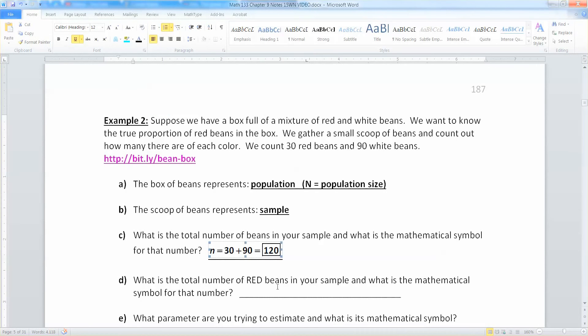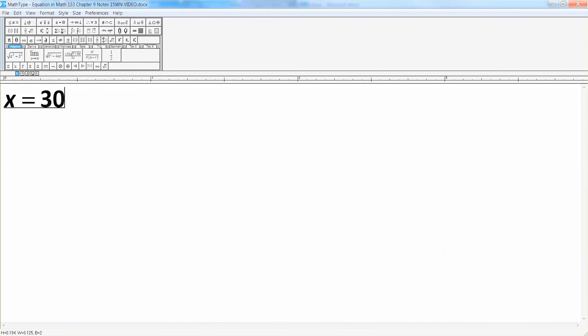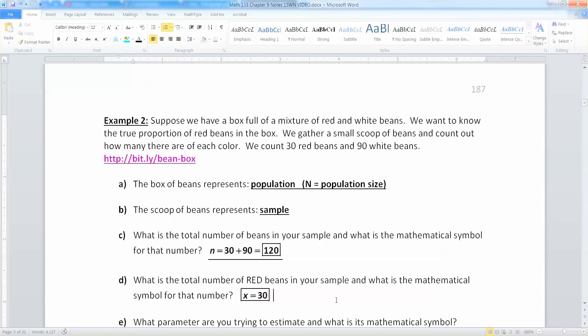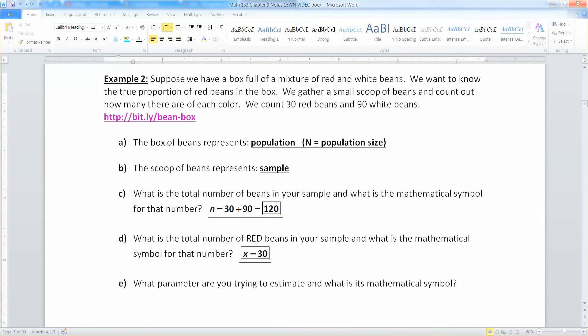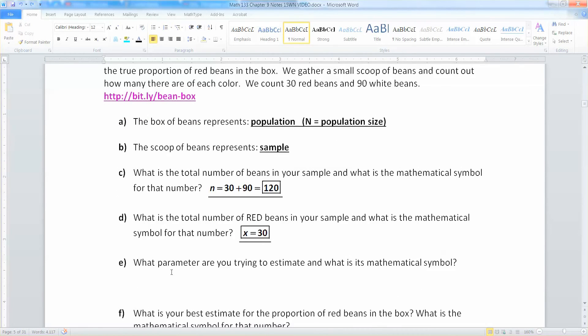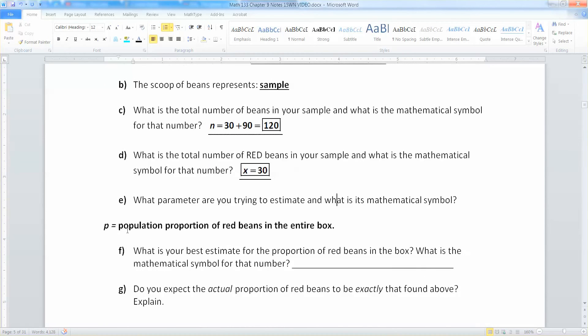We had 120 beans. The total number of red beans was X which was 30. So that's all we're interested in, there is 30, and its mathematical symbol is X. Now the parameter we're trying to estimate is P, which is the population value, the population proportion if you will, of all red beans in the box. So it's the population proportion of red beans in the entire box.